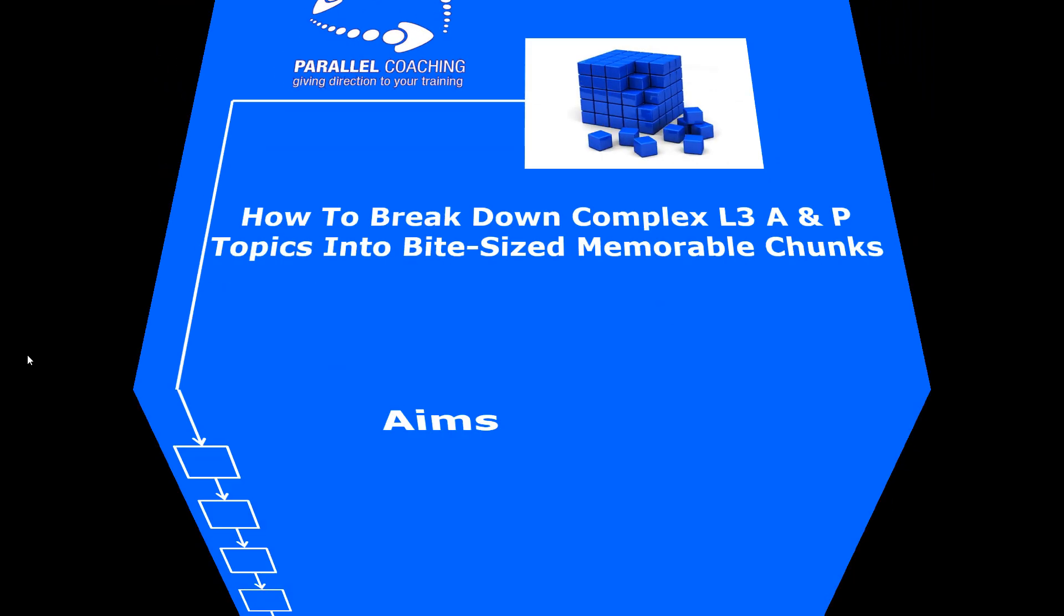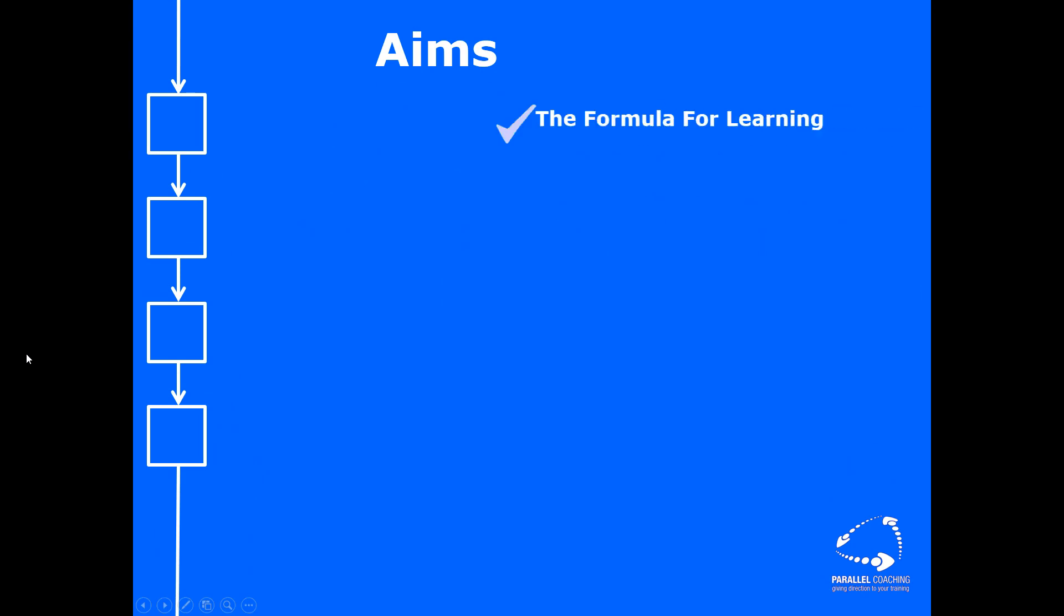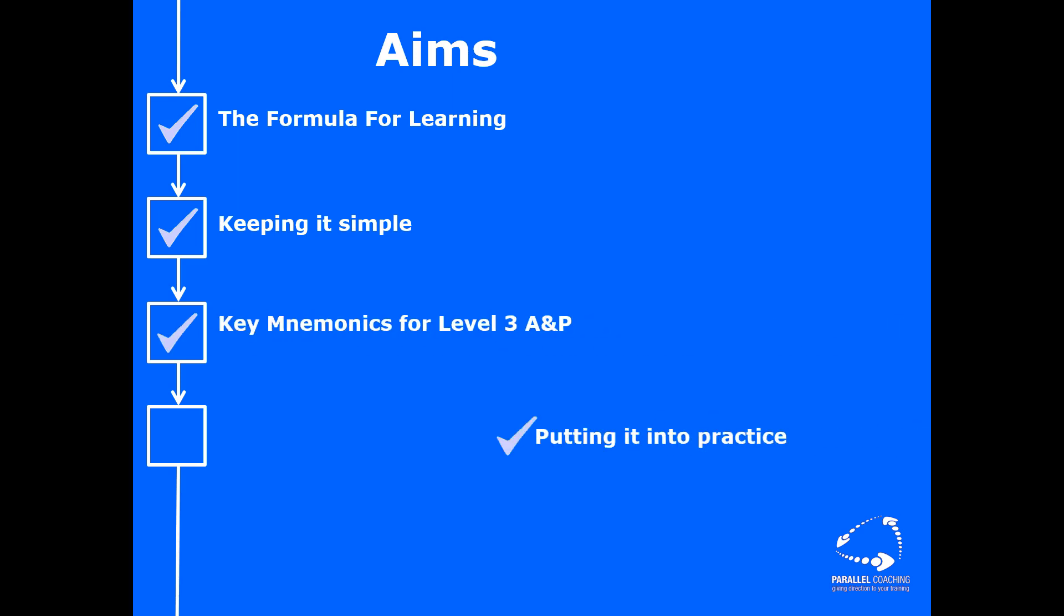In today's web class, we're going to cover four main areas. These areas are the formula for learning so you can actually understand how you learn and how it's best to learn, key mnemonics for level three anatomy and physiology, and then putting those into practice. So let's go ahead and have a look straight away at these four areas.